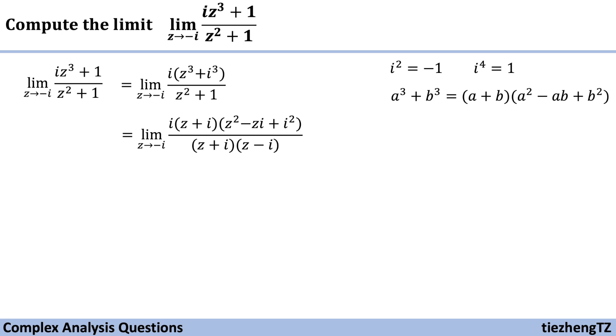We have limit z approaches -i: i(z + i)(z² - zi + i²) over (z + i)(z - i). z + i can be cancelled,